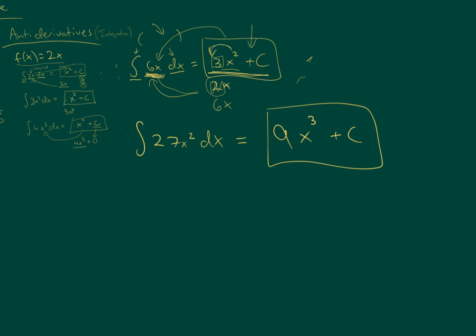If we wanted to write the antiderivative power rule generally, then suppose you have the antiderivative of x to the n with respect to x. We know the exponent becomes n plus 1. With a little bit of work, you can figure out that 1 over n plus 1 will be the constant that goes in front, and then plus c.